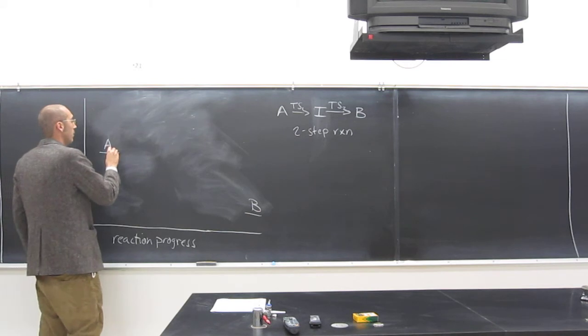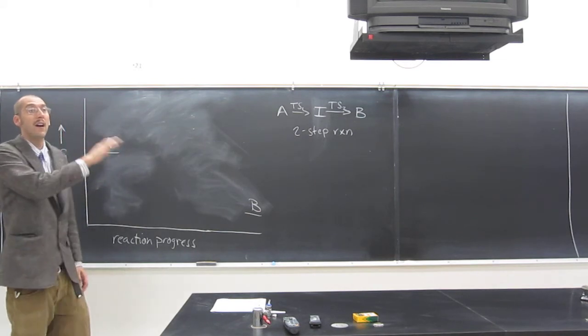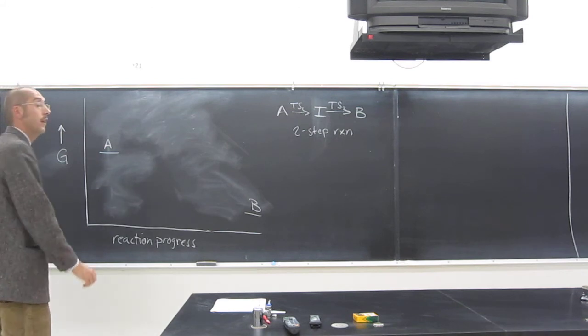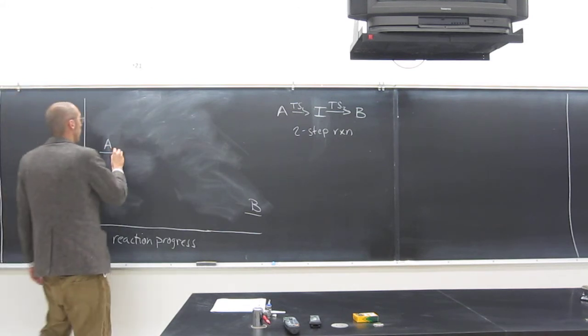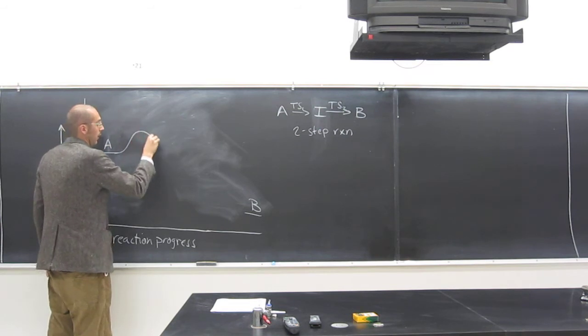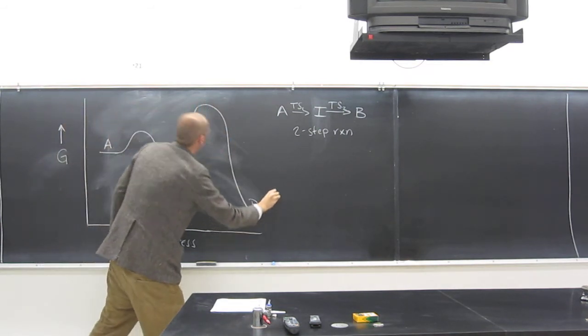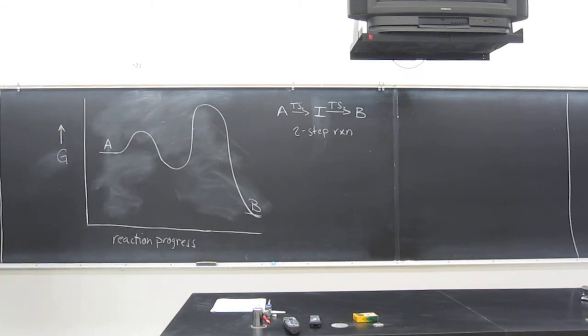You're going to have two humps, but the second hump is going to be the rate determining step. So the second hump is going to be bigger than the first one, right? So, like that, okay?